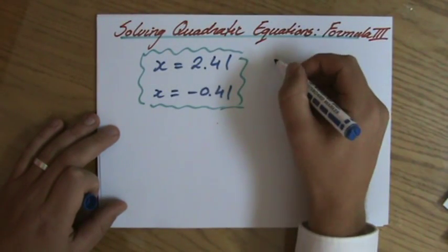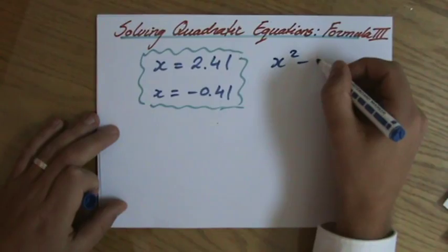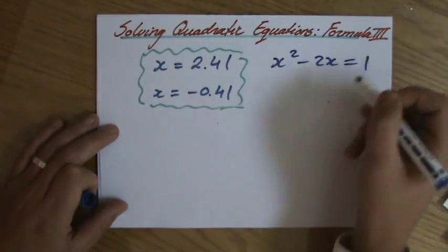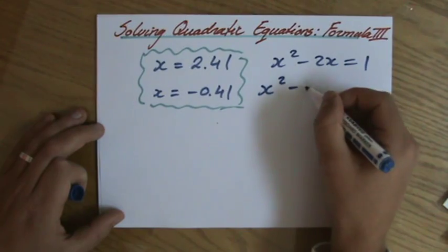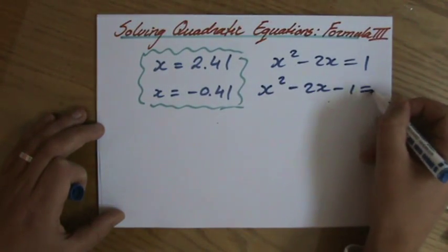I'm just going to write the initial question here, that is x squared minus 2x equals 1. But first we rearrange that, of course, to x squared minus 2x minus 1 equals 0.